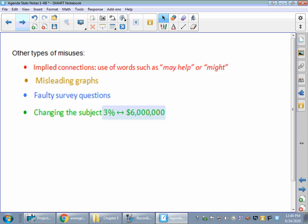And last but not least, this one's a good one. Changing the subject is what the book calls it. It's when people jump back and forth between two different labels. Like you might say, oh well, only 3% of the budget is being earmarked to buying paper for school. But then when you look at the real number, it's $6 million.